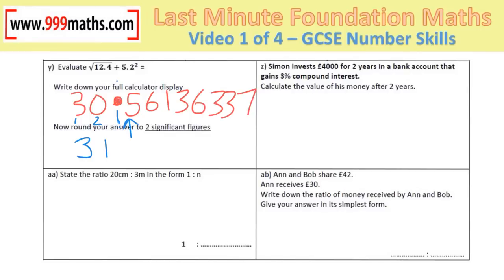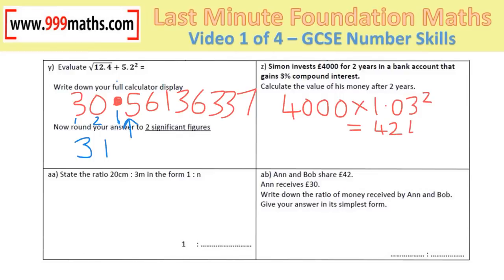Compound interest using the shortcut method: original amount £4000, times 1.03 — which is the interest rate — to the power of 2 because it's for 2 years. On a calculator, the answer is £4243.60.